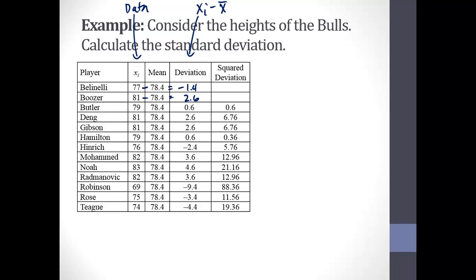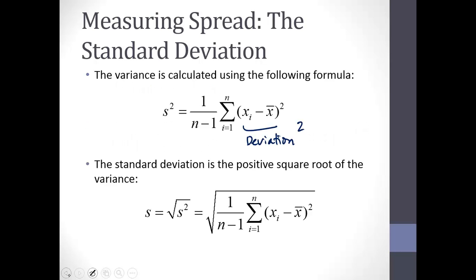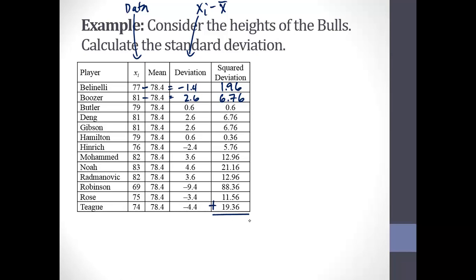For each observation you can calculate the deviation from the mean. The final column squares those deviations: negative 1.4 squared gives 1.96, and 2.6 squared gives 6.76. I'm just taking the deviation and squaring it. Looking back at our formula, now that I've calculated and squared the deviations, I need to add them all up. The sum of that entire column is 195.08 inches squared — the units are squared because I squared the height.